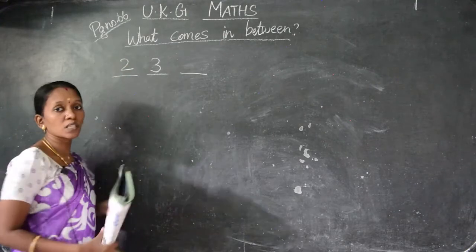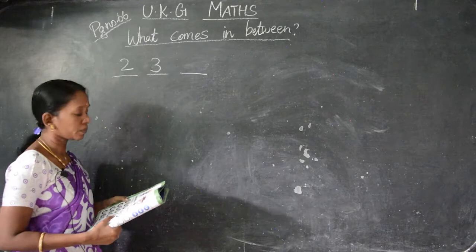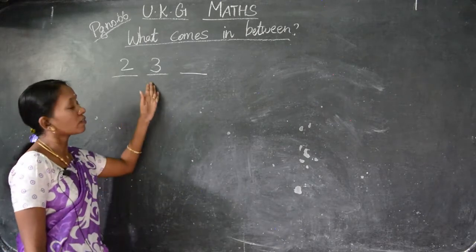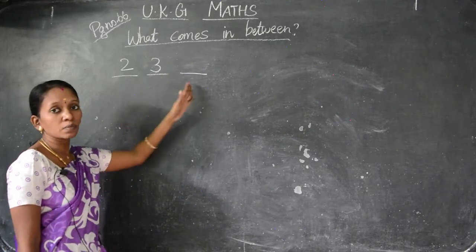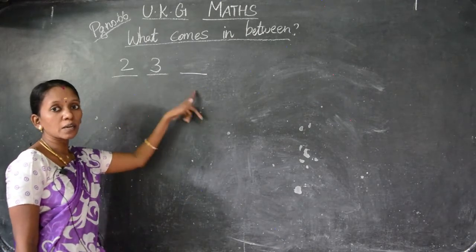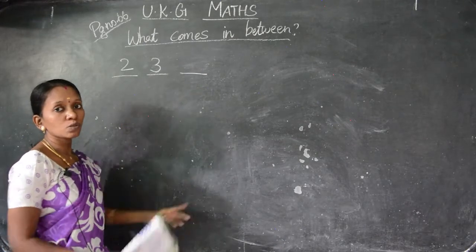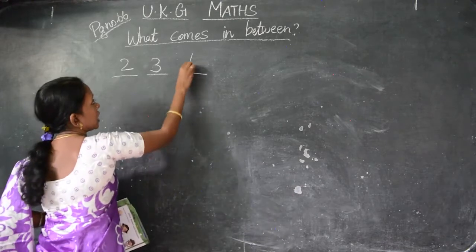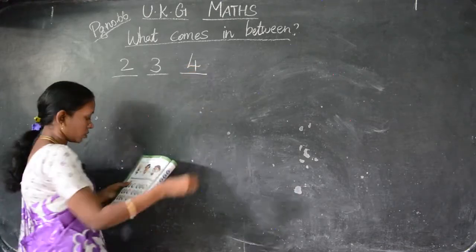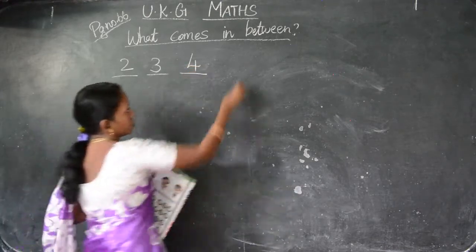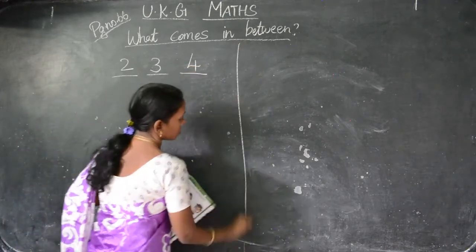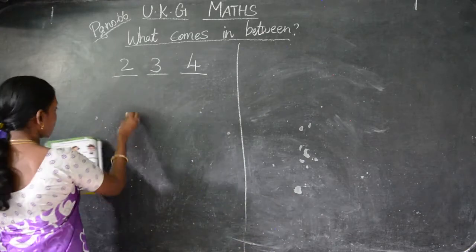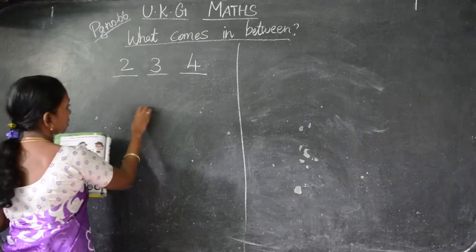Take your pencil and write. After 3, what will come? 3 is the number in the middle. 4 is the number after. Like that we have to write.